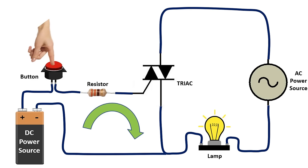Here, if we remove our hand from the button, that is, if we cut off the trigger coming from the gate pin, the lamp will turn off.